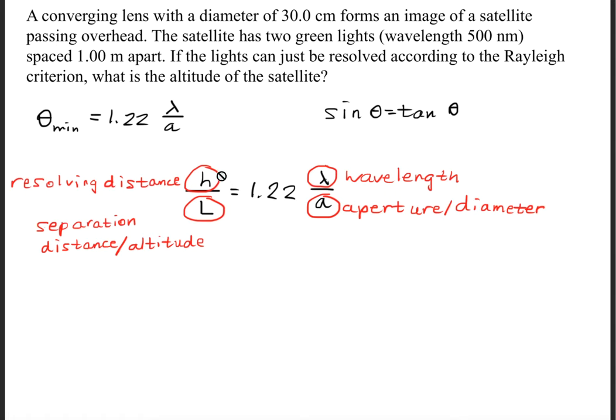H represents what's called the resolving distance. The resolving distance is simply how far away those two points are from one another.